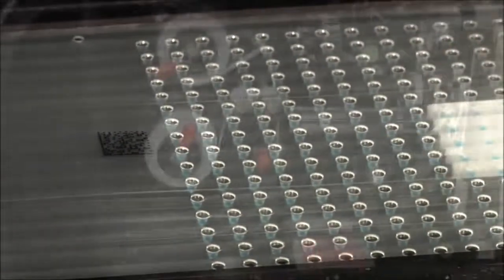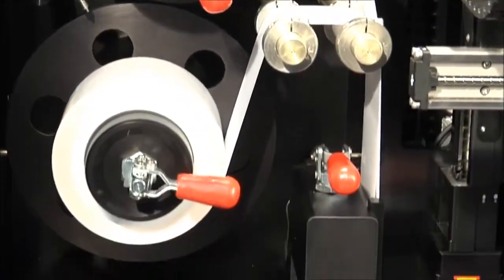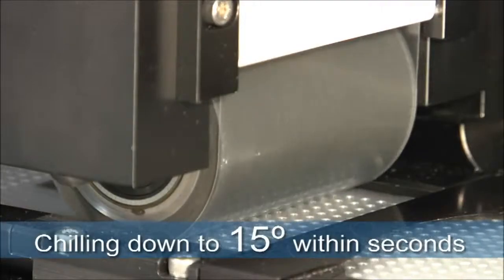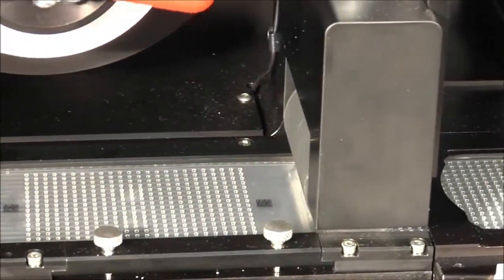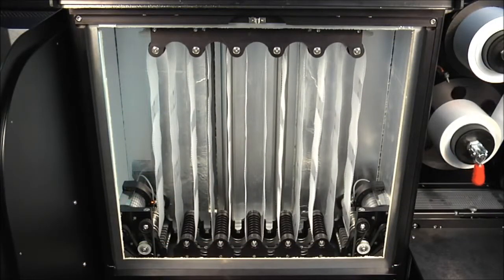Each array is automatically sealed quickly, preventing amplicon contamination. During the sealing process, the assay is chilled to as low as 15 degrees within seconds, enabling precise incubation time and temperature. Samples then enter the incubation module where amplification will occur.